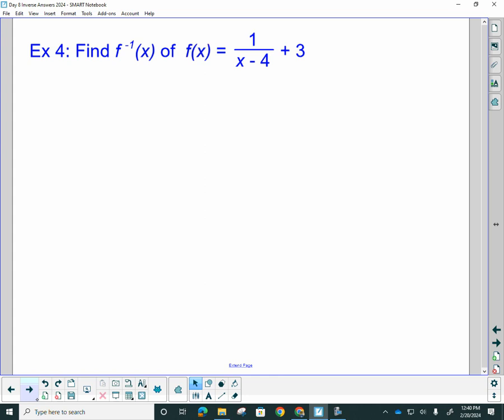you have 1 over x minus 4 plus 3. So if I was to take an x and put it into this function, I would go minus 4, and then be 1 over that answer, and then plus 3. So if I'm going backwards, I anticipate the first thing I'm going to have to do is subtract 3, and then add 4 somehow. But let's see algebraically how that looks.